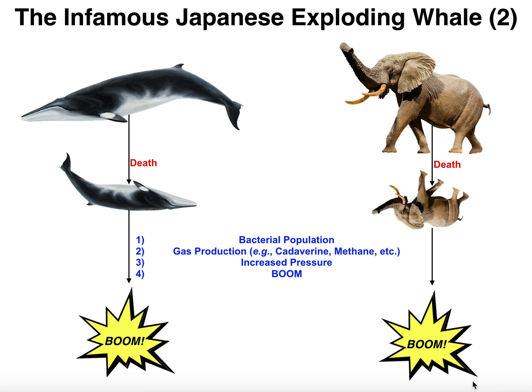You might wonder why we've never heard of this occurring in a human or any kind of pet. The reality is this only occurs with very large organisms. A human relative to the size of an elephant or a whale is very, very small. It turns out that with smaller organisms this does not happen, because it requires a large amount of biomass in order to produce enough gas to get that pressure buildup.